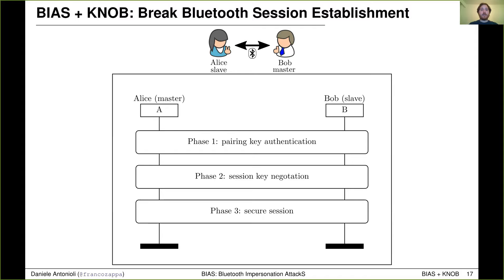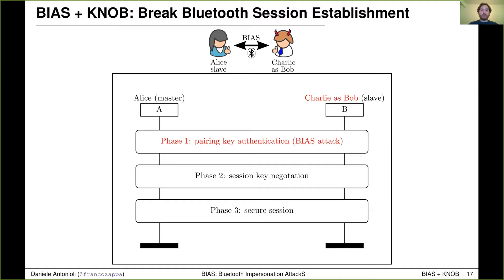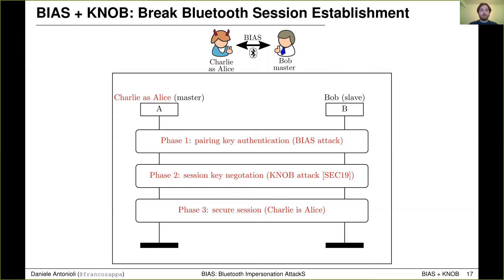The BIAS attacks are particularly dangerous when combined with the KNOB attack. The KNOB attack is a standard-compliant attack on Bluetooth key negotiation that we demonstrated last year at USENIX Security. The combination of these attacks enables breaking not only Bluetooth authentication but the whole session establishment protocol. In the legitimate case, Alice and Bob can establish a secure session by completing authentication and session key negotiation. With the BIAS attack, Charlie can bypass authentication without knowing the pairing key. Then with the KNOB attack, Charlie can downgrade the entropy of the session key to a very low value. Finally, Charlie can start a secure session with Alice as Bob and brute force the low entropy session key, even if it was derived from a strong pairing key that Charlie does not know. The same happens when Charlie impersonates Alice to Bob and combines the BIAS and KNOB attacks.